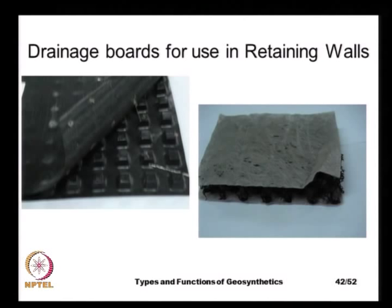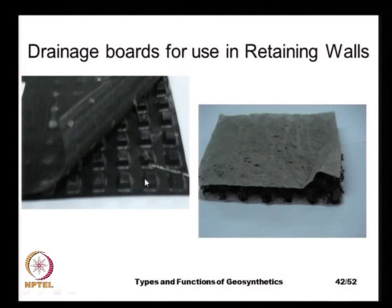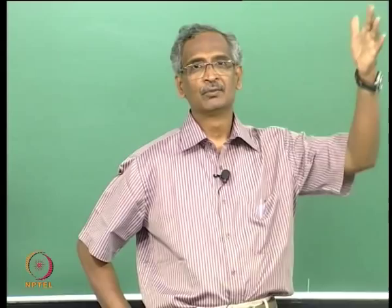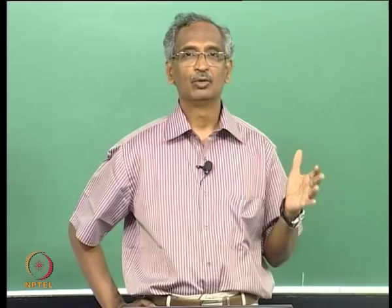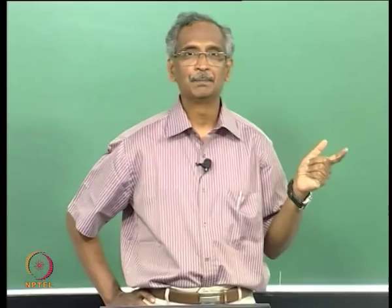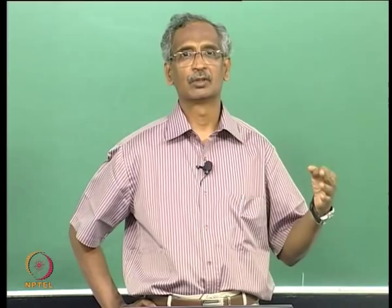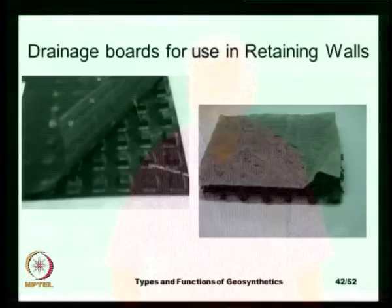These are examples of geoboards or drainage boards used behind retaining walls. Here we have a woven or nonwoven geotextile combined with a punched plastic sheet acting as a drainage layer. Fixed behind a retaining wall, this acts as an excellent drain along the full height of the wall — replacing the need for a drainage layer made from high-quality aggregate.